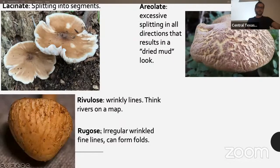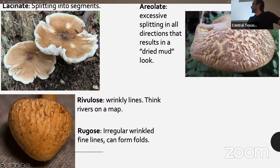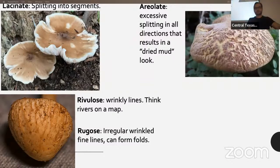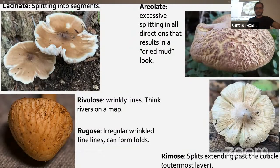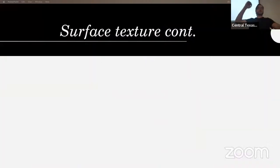Rivulose and rugose are two words for different types of irregular lines — you can often use either one, or put both with a slash. Many Agrocybe species we have out here will do that when very young. Rimose means splitting extending past the outer cuticle — when it's not just the top splitting like areolate, it's actually going into the flesh of the mushroom underneath and causing an entire split.